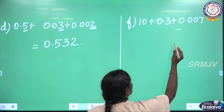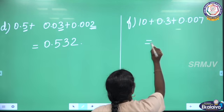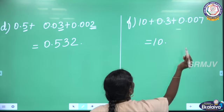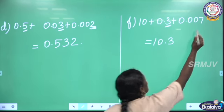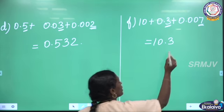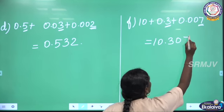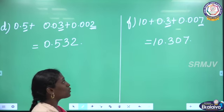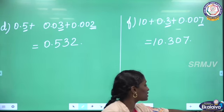Then: 10 plus 0.3 plus 0.007. Here 10 is the whole number. In the 10th place, 3. Here 7 is in the 1000th place, but there is no number for the 100th place, so we have to put 0 there, and in the 1000th place we write 7. So 10.307 is the required decimal number.